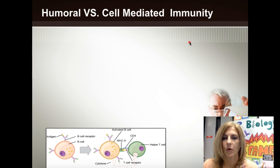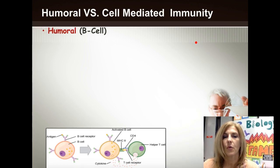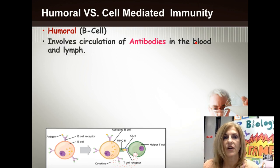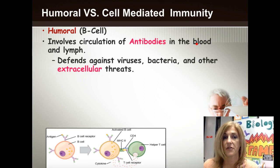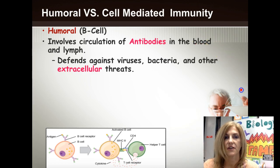Let's start with a comparison of the humoral and the cell-mediated response. The humoral response involves blood and lymph — the two B's go together: B cells and blood. It involves antibodies and takes care of extracellular threats: things that haven't gotten into your tissue cells yet, like viruses, bacteria, or any other extracellular threat.